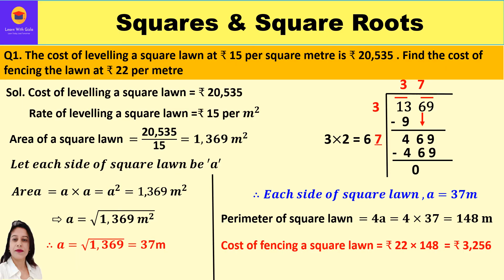The first question is: the cost of leveling a square lawn at rupees 15 per square meter is rupees 20,535. Find the cost of fencing the lawn at rupees 22 per meter. So here we have to find the cost of fencing the lawn, which means we have to find the perimeter of the lawn, then multiply by the rate of 22.